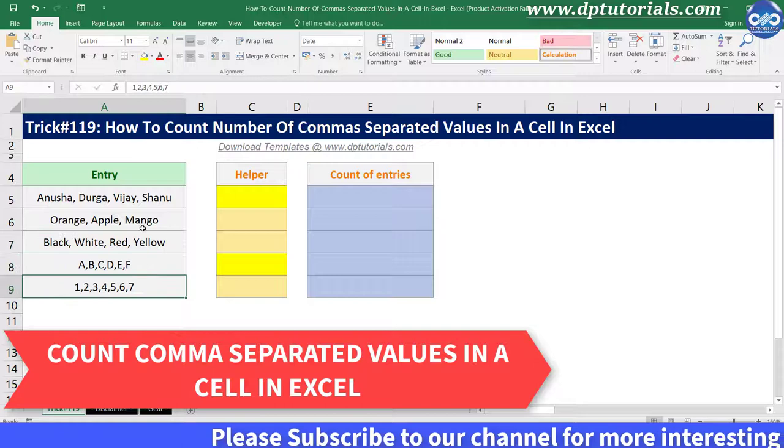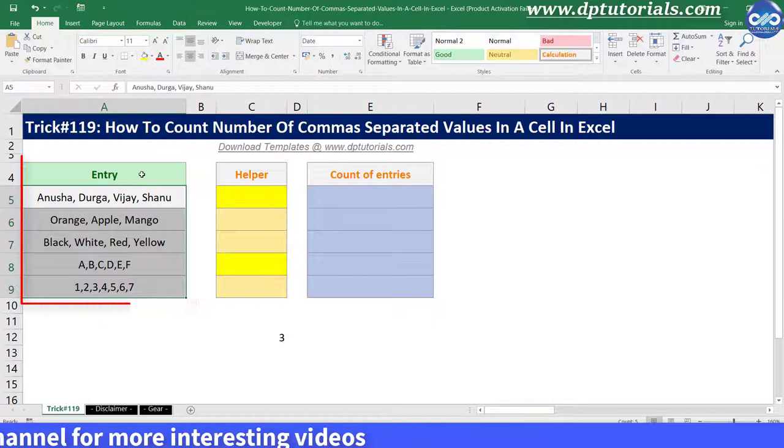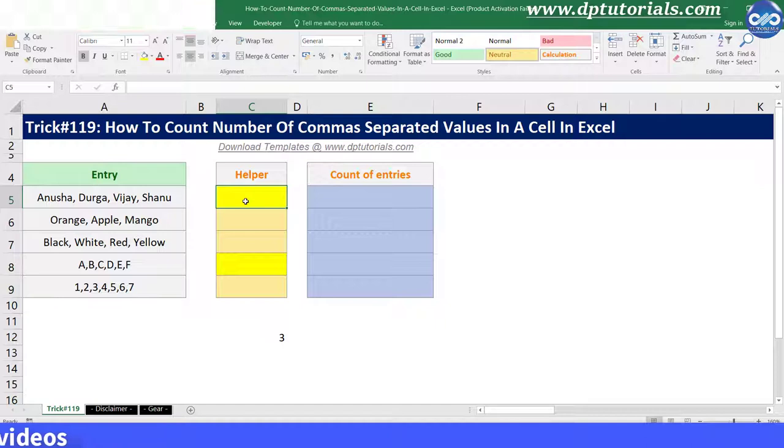Let us consider this example where we have got some comma separated entries in each cell. In the helper column, first let us count the number of commas and then add one to these results to get the desired answer.